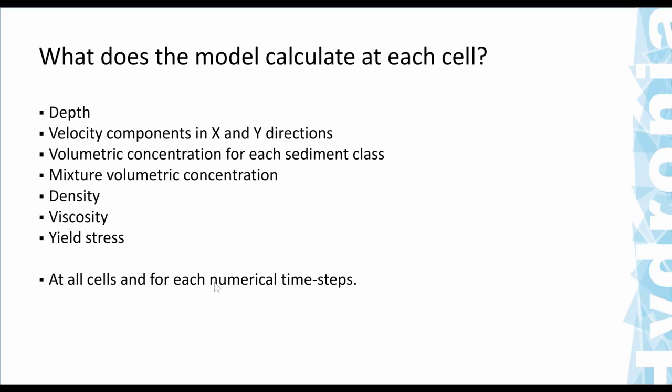The unknowns calculated at each cell include: depth (h), velocity components (u, v) in x and y directions — a full 2D model with velocity in any direction — then for each sediment class the volumetric concentration, the mixture volumetric concentration for the full mixture of sediment and water, and the density, viscosity, and yield stress of the mixture. These are all calculated at every cell for each numerical time step.